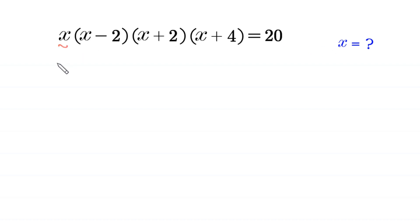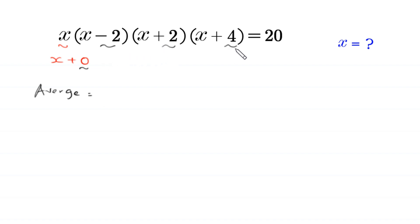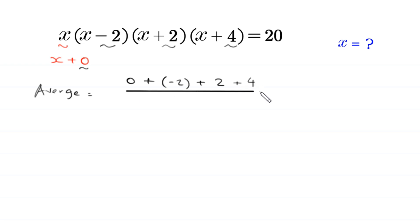Notice that x is the same as x plus 0. The average of the constants 0, negative 2, 2, and 4 is: (0 + (−2) + 2 + 4) divided by 4, which equals 4 divided by 4, and this is equal to 1.